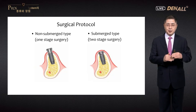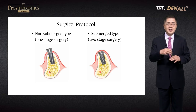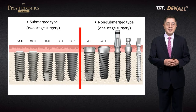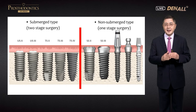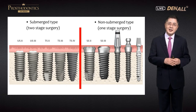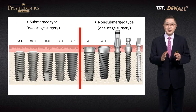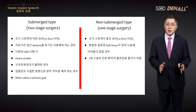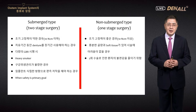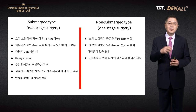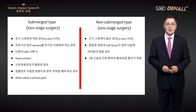Implants used to be submerged in bone, and after osseointegration the second surgery is done — two-stage surgery versus one-stage surgery. Ostem's US and TS were designed to be submerged. SS or MS series for lower anterior are designed to come up through the gingiva, so one-stage surgery is needed. But recently, submerged types also use immediate healing abutment connection, turning into one-stage surgery.